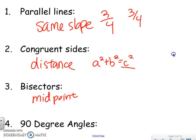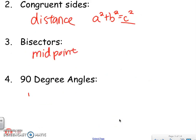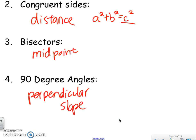Lastly, for 90-degree angles, we know that means the slopes are perpendicular. Perpendicular slopes would be 3/4 and its opposite reciprocal, which is negative 4/3. So if you have two slopes like that, there is a right angle at that vertex — you know you have a 90-degree angle.